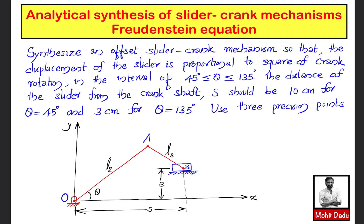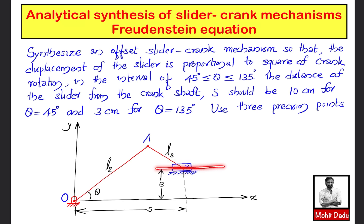We have to synthesize an offset slider crank mechanism so that the displacement of the slider is proportional to the square of the crank rotation. In the previous problem for the 4-bar mechanism, the relation between input crank angle theta and output angle phi were given, but here such a function is not explicitly given — instead it is stated that displacement is proportional to the square of the crank rotation. The input is crank rotation theta. The crank has length l2, the connecting rod has length l3, and the slider is offset at a distance e.